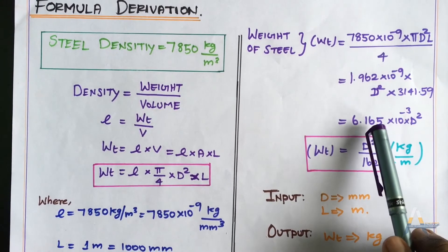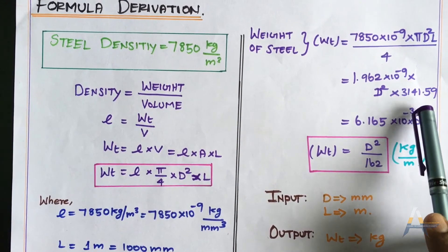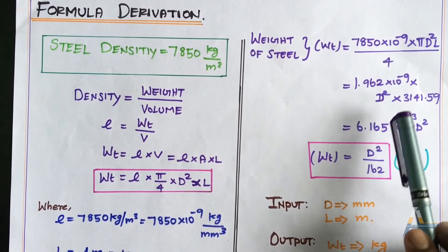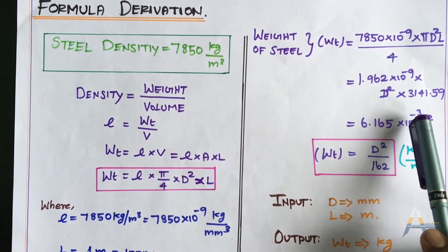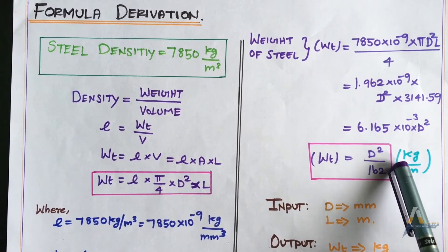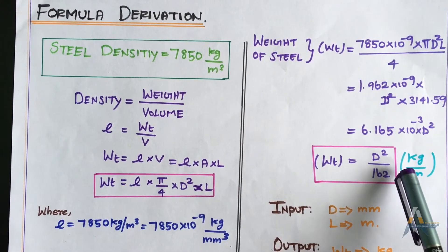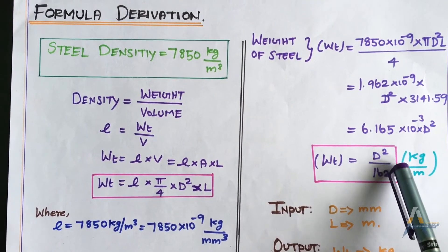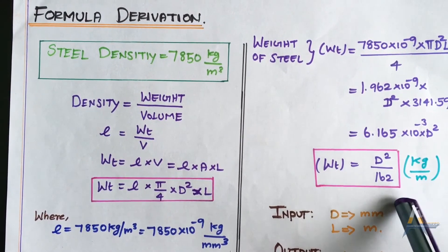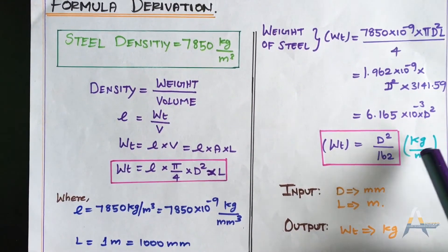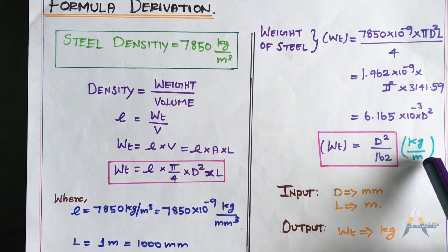This simplifies to 6.165 × 10^-3 D². This constant can be expressed as a fraction: 1/162.27, which we round to 1/162. So the formula becomes D² divided by 162, giving us kg per meter.